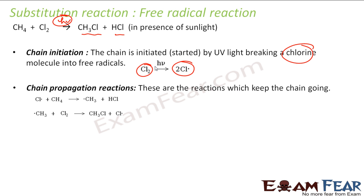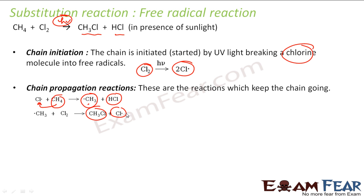The next is the chain propagation steps. These are the reactions which keep the chain going. What happens here is this methane will react with the Cl radical. It will give the CH₃ radical and HCl. And this CH₃ radical will again react with chlorine, giving CH₃Cl. A lot of reactions will happen and form products.